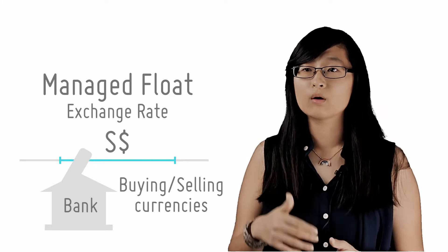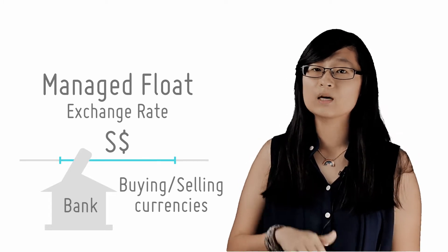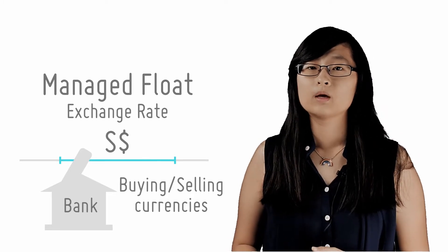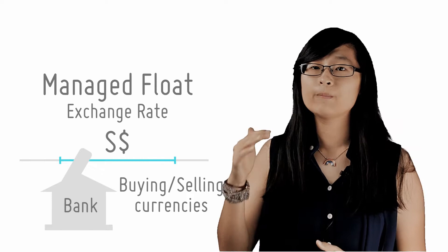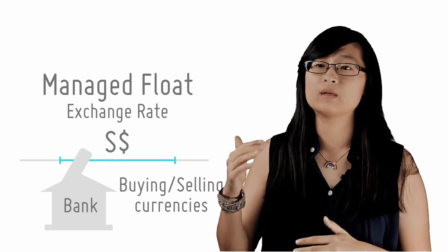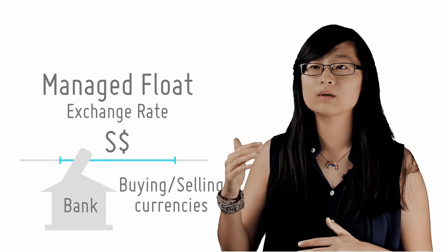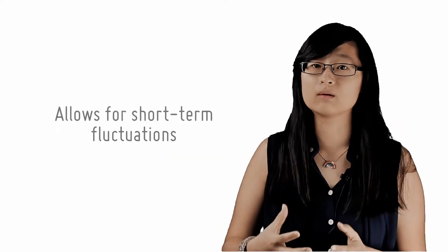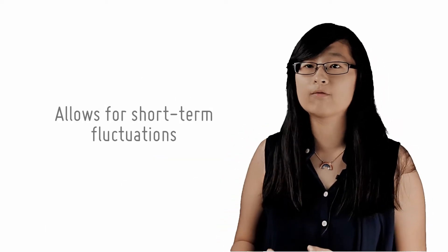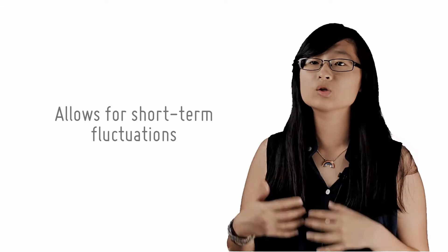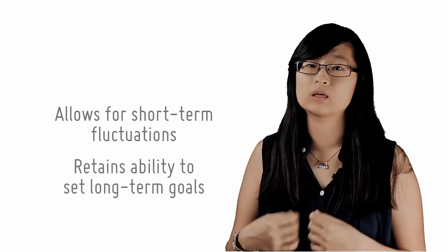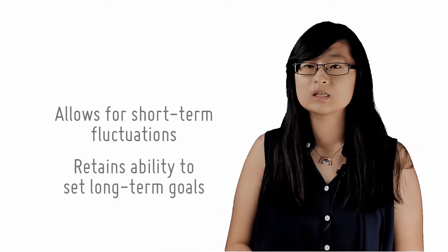We will learn more about how this policy works in Singapore in later lectures. By setting an upper and lower limit for the exchange rate, the government allows rapid adjustments in the short term via free market forces, but also retains the ability to set long-term goals regarding the exchange rate.